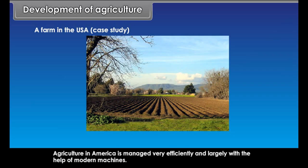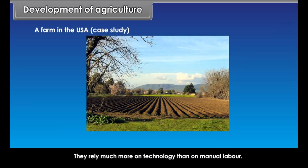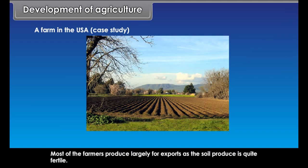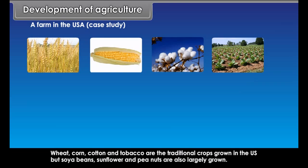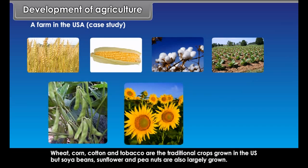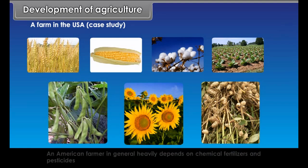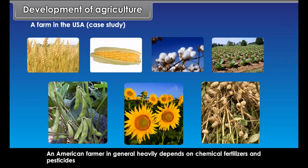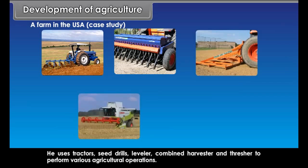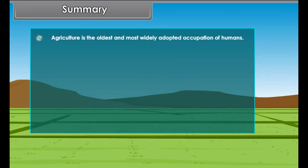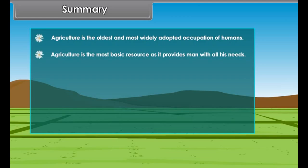A farm in the USA — case study: Farmers in the USA generally reside in the farms. The average size of plots in the USA is much larger than that of an Indian farm. Agriculture in America is managed very efficiently and largely with the help of modern machines. Farmers rely much more on technology than on manual labour. Most farmers produce largely for exports as the soil is quite fertile. Wheat, corn, cotton and tobacco are the traditional crops grown in the US, but soya beans, sunflower and peanuts are also largely grown. An American farmer heavily depends on chemical fertilizers and pesticides.